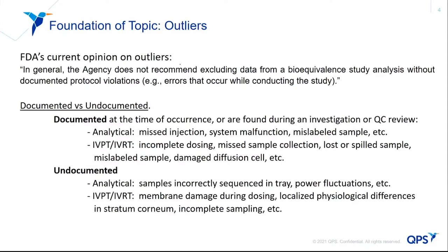FDA's current opinion is that, in general, the agency does not recommend excluding data from a bioequivalence study analysis without documented protocol violations. A documented violation is typically one that was actually observed, traceable through an audit trail, or supported by written evidence indicating a protocol deviation causing that data point or skin section to differ from other replicates. It's the undocumented activities or functions that are the problem, particularly with skin.